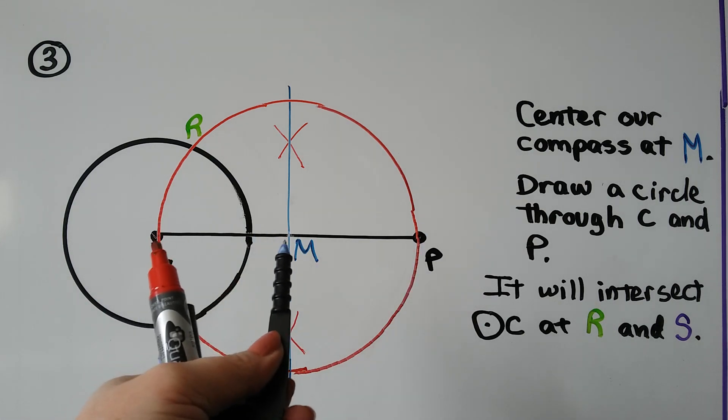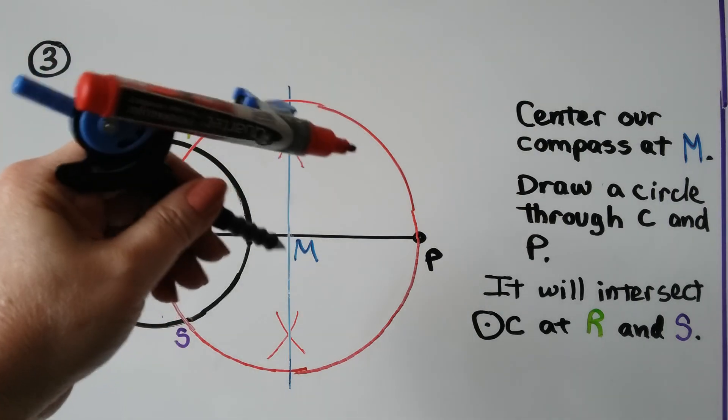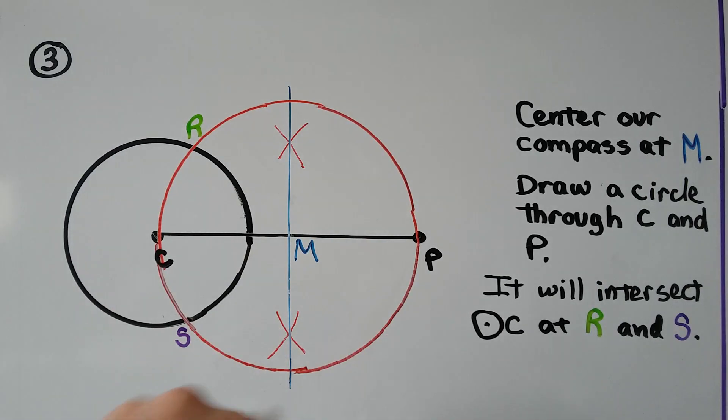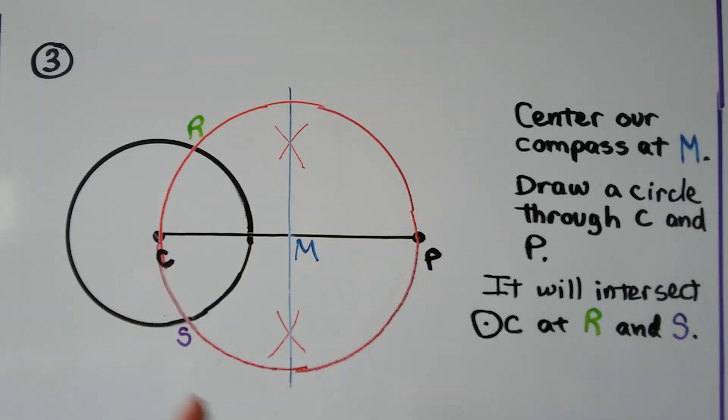We're going to save this setting, and we're going to put the point here on M, and we're going to make our circle going all the way around. So that should go through C, and it should go through P.